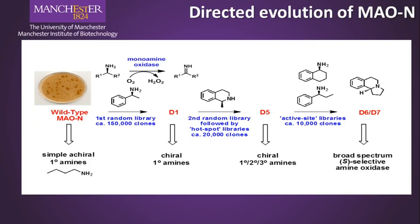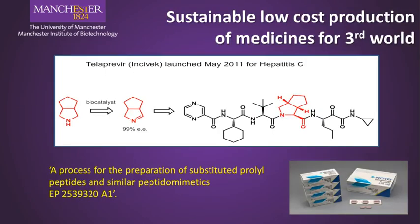By this process of laboratory evolution, we can create new biocatalysts with new activities. We were able to develop one particular variant of monoamine oxidase N to produce a chiral imine building block from the symmetrical pyrrolidine starting material. That chiral imine, generated in 99% EE (enantiomeric excess), was used for the synthesis of a pharmaceutical drug called telaprevir, which is used for treating hepatitis C. So we were able to first evolve the particular form of the biocatalyst needed and then use that biocatalyst to make a key building block for telaprevir.